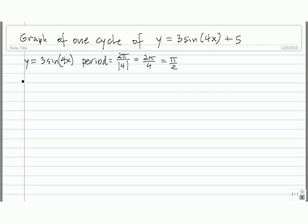Next, we want to find the amplitude. The amplitude is the absolute value of the coefficient of sine, which is 3. The absolute value of 3 is just 3.